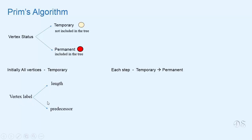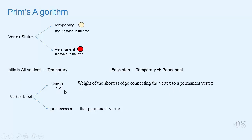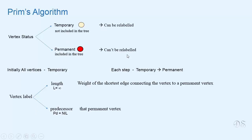Each vertex is given two values: length and predecessor. Length of a vertex represents the weight of the shortest edge connecting the vertex to a permanent vertex, and predecessor represents that permanent vertex. When the algorithm starts, the length of all vertices is initialized to infinity, which is a very large number, and predecessor is initialized to nil, taken as minus 1 since our vertices start from 0. A temporary vertex can be relabeled — its length and predecessor values can be changed — but once a vertex is made permanent, it cannot be relabeled.